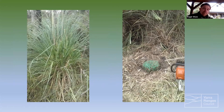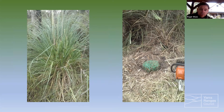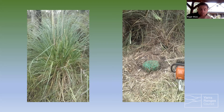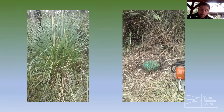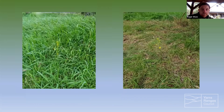Here's a technique we use on pampas grass — we chainsaw through the plant, cut it back, remove the material down to its base, then paint those cut stems with herbicide using a dab bottle or small spray bottle to ensure good coverage. You can do this technique with a hand saw too. This was a particularly large pampas grass — we cut the plant back, remove the material, get it to the base, and then treat the cut stems.